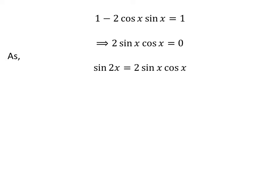We know the trigonometry identity: sine of 2x is equal to 2 times sine of x times cosine of x. The proof of this identity has been explained in the video appearing in the upper right corner, and the link is also given in the description section. Applying this identity gives us sine of 2x is equal to 0.